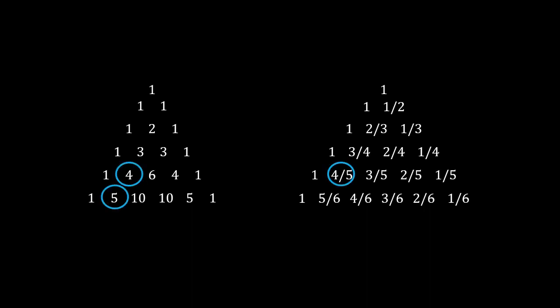What we'll do is we start with the Pascal triangle and we construct a second triangle as follows. Now we look at a term in the Pascal triangle and we divide it by the term to its lower left. And this gives the corresponding term in the second triangle.